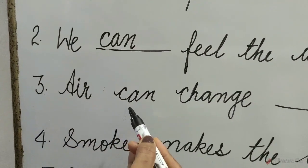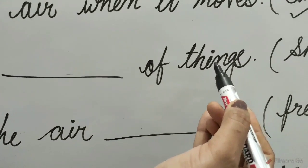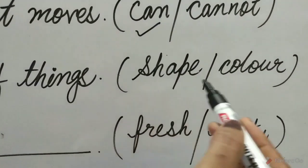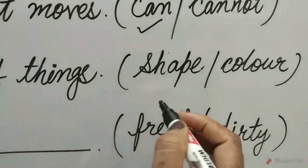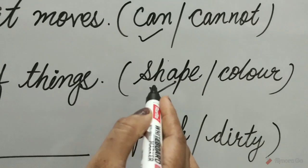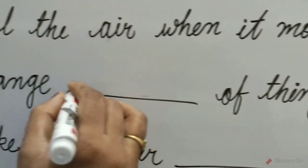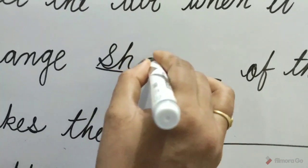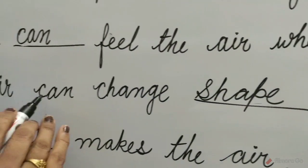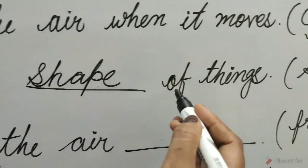Question 3: Air can change dash of things. The options are shape or color. The shape option is correct. So we tick shape and write: Air can change shape of things.